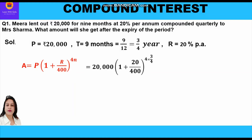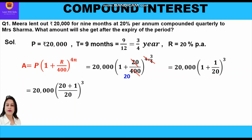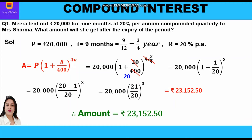Now 20 divides 400 giving 20 in the denominator, and the 4s in the power cancel, giving 20,000 × (1 + 1/20)^3. Taking LCM: 20,000 × (21/20)^3, which equals rupees 23,152.50. So the amount that Mira will get after the expiry of the nine-month period is rupees 23,152.50.